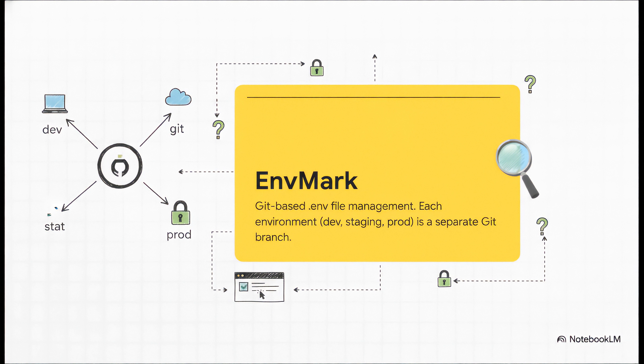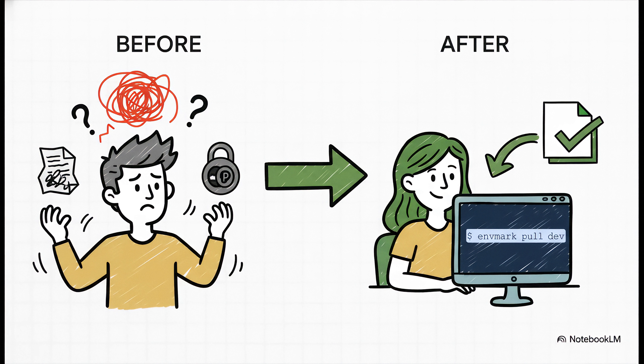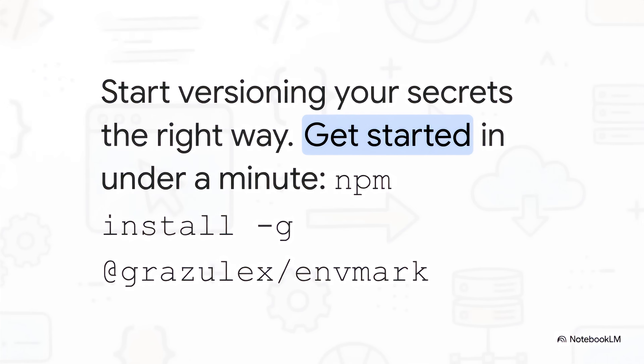So let's tackle secrets first with a tool called EnvyMark. The approach here is just elegant: you have a single Git repository for all your project's secrets, and each environment — like dev, staging, or prod — is simply a branch in that repo. This means you get version history, diffs, and access control for your secrets, all using the power of Git. The difference this makes is just night and day. Need the environment variables for development? You just run EnvyMark pull dev. No more hunting through password managers or bugging your teammates for the latest .env file. Just like Backmark, EnvyMark is totally open source and super easy to install.